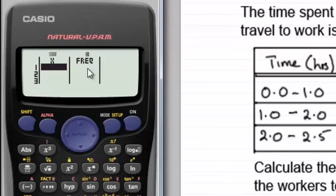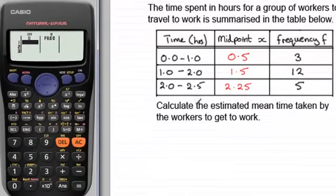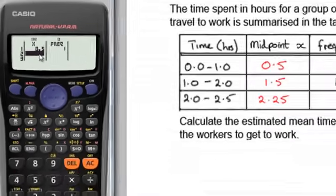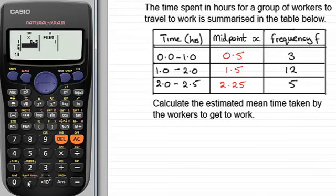Now we need to enter our values. So in this column x we're entering the midpoints here. We start by just entering the first one 0.5. We'll put 0.5 and then you just press equals. You can see the cursor automatically moves down this column. So I'm going to type in the next one, 1.5. Press equals again and the cursor will move down. Next up is 2.25, so 2.25, press equals and that's entered. It's moved down to row 4. There isn't another row, but obviously we would carry on for as many rows as we had.